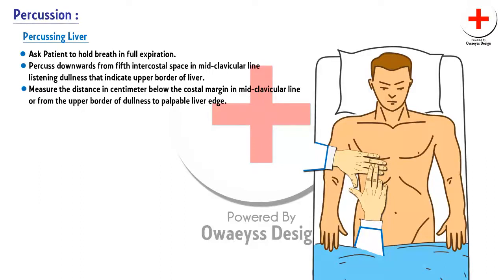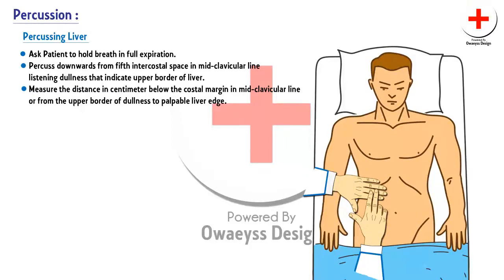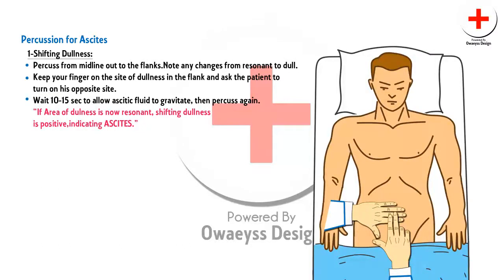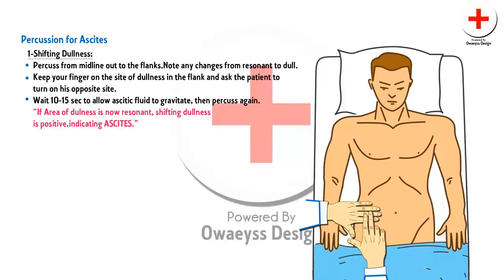Now we move to percussion. While percussing the liver, ask the patient to hold their breath in full expiration. Percuss downwards from the fifth intercostal space in the midclavicular line, listening for dullness indicating the upper border of the liver. Measure the distance in centimetres below the costal margin in the midclavicular line, or from the upper border of dullness to the palpable liver edge. For the spleen, percuss over the lateral chest wall to confirm or exclude splenic dullness. Detecting ascites by percussion requires significant skill. This process includes two steps: shifting dullness and fluid thrill. For shifting dullness, percuss from the midline out to the flanks. Note any changes from resonant to dull. Keep your finger on the area of dullness in the flank and ask the patient to turn onto the opposite side. Wait 10 to 15 seconds to allow ascitic fluid to gravitate, then percuss again. If the area of dullness is now resonant, shifting dullness is positive, indicating ascites.